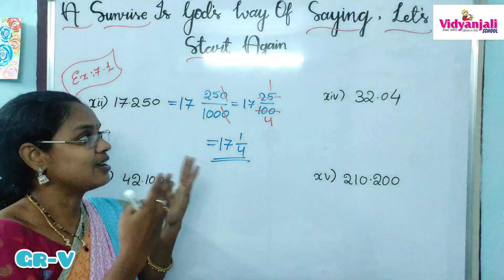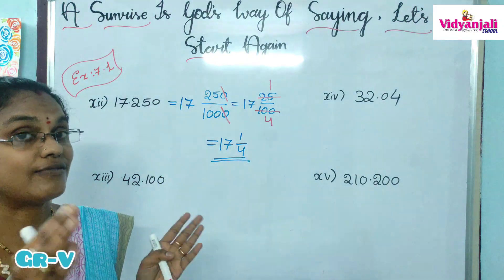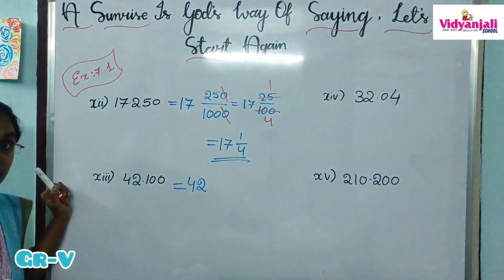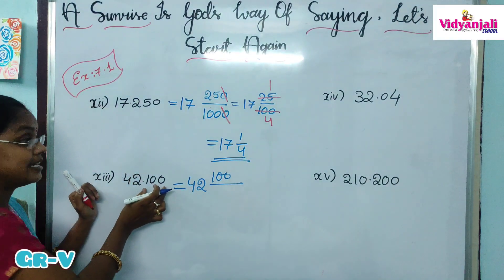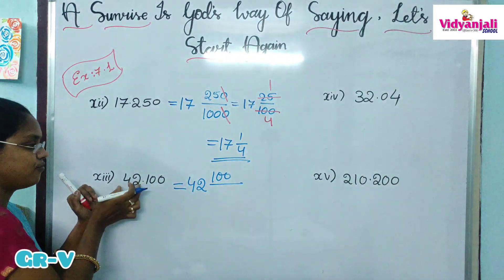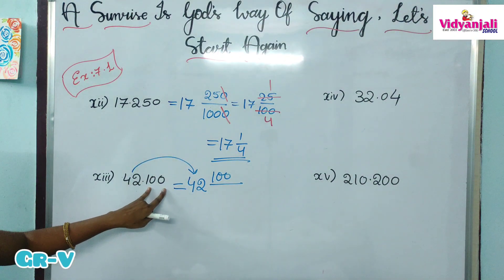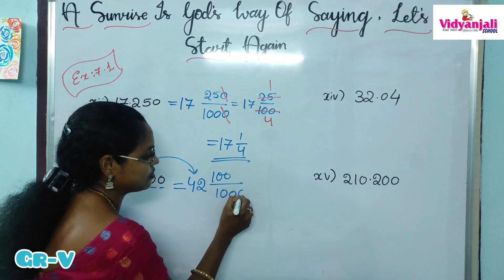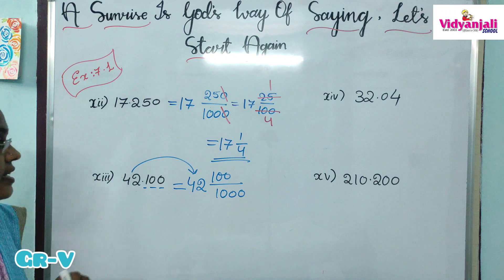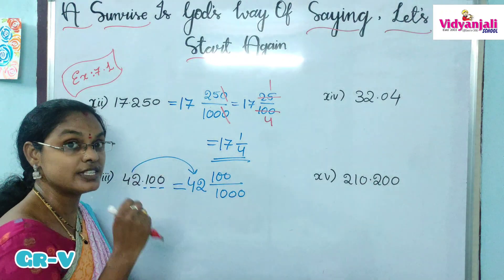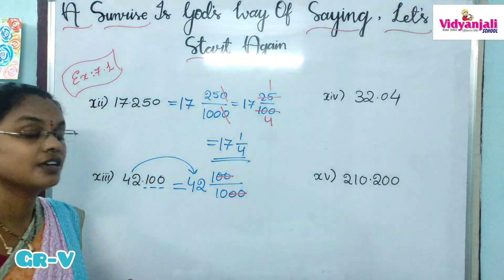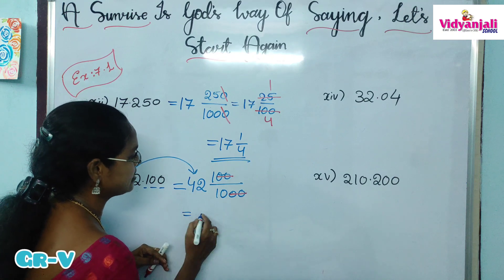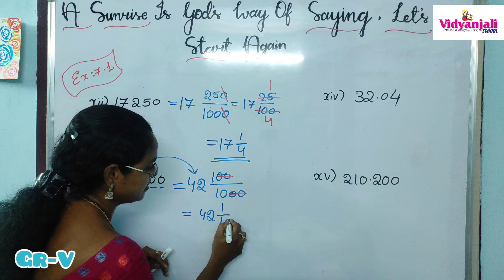If you only listen nicely you cannot do the problems — you have to practice after watching this video. Next question: 42.100. What is the whole part? 42 is the whole part. What is the decimal part? 100 is the decimal part. The decimal part becomes the fraction, while the whole part stays as 42. So we write 42 and 100 by 1000, since 100 has 3 digits. We can cancel 2 zeros in numerator and denominator — cancelling 2 zeros means we cancelled in the 100 times table — leaving 1 by 10. So the answer is 42 and 1 by 10.